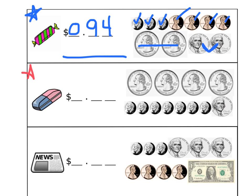Now let's move on to the next problem with the eraser being purchased. Count up the coins, write the money amount, then check your answer. The first thing my eyes notice is four quarters — that's a dollar already. I'll wait before writing though, in case the rest of the coins make more than just one dollar. I see a whole lot of dimes: 10, 20, 30, 40, 50, 60, 70. And this is a nickel — so seventy-five cents. Altogether I have one dollar and seventy-five cents.